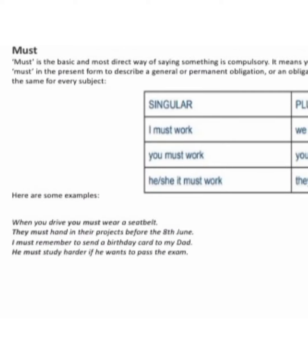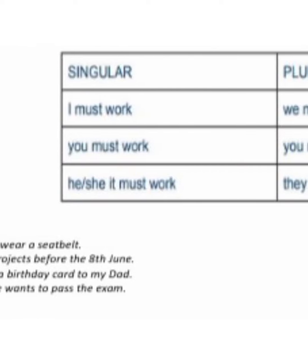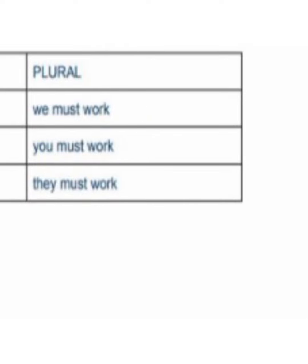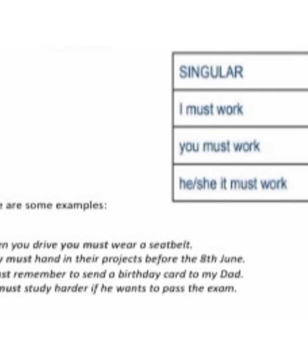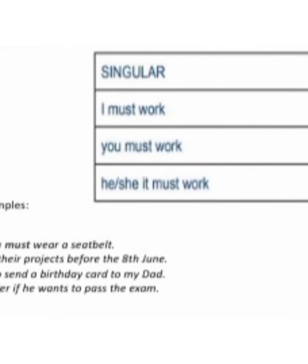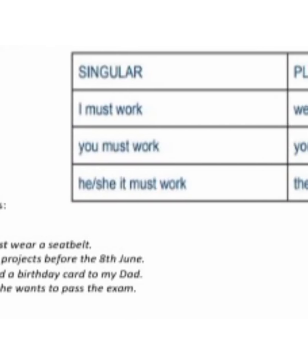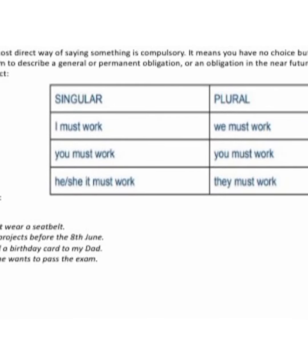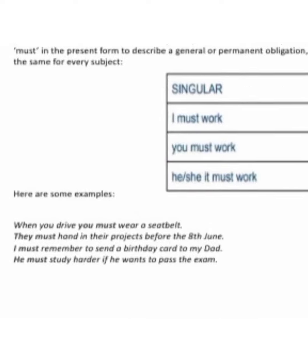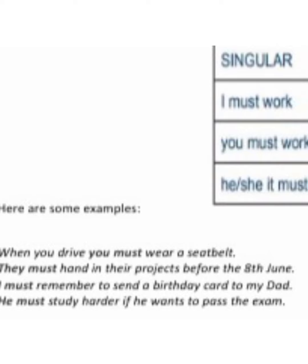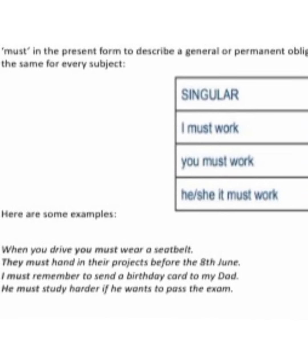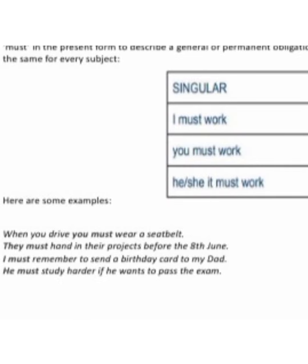Now coming to the usage of must. Must is the basic and most direct way of saying something which is compulsory — it means you don't have any choice but to do that action. We can use must only in the present form to describe a general or permanent obligation, or an obligation in the near future. The structure is: I must work, we must work, you must work, he/she must work, they must work. Examples: 'When you drive, you must wear a seatbelt,' 'They must hand in their projects before 8th June,' 'I must remember to send a birthday card to my dad,' 'He must study harder if he wants to pass the exam.'